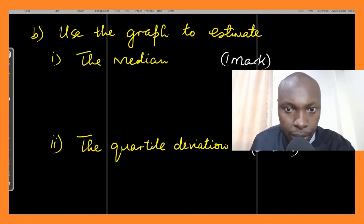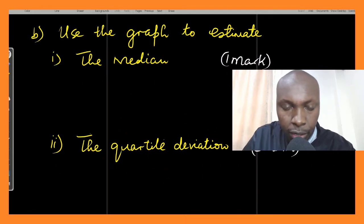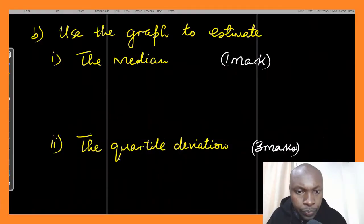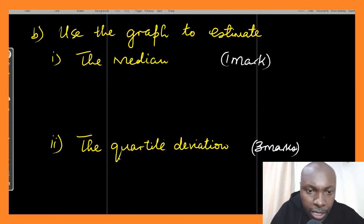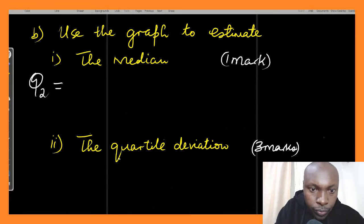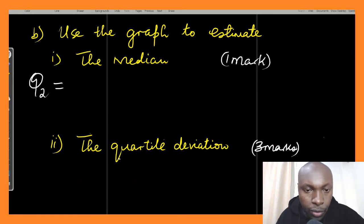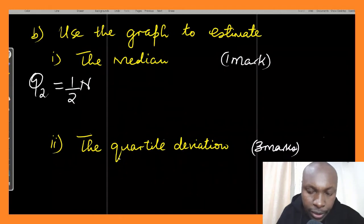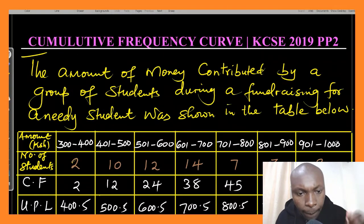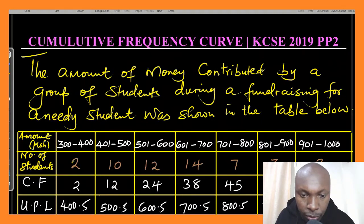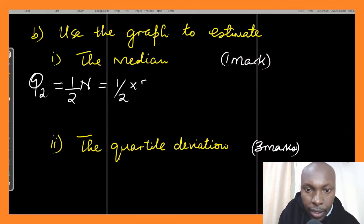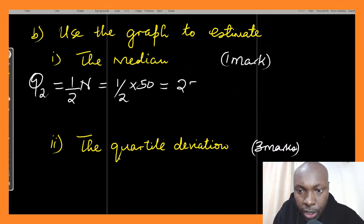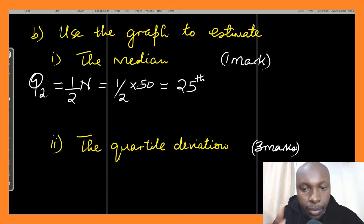Now for part b: use the graph to estimate the median. The median, also denoted as Q2, is obtained by finding its position: half multiplied by the total frequency. The total frequency — total number of students — is 50. So the median position is one-half multiplied by 50, which gives the 25th position. The 25th student is the one that gives the median for this data.